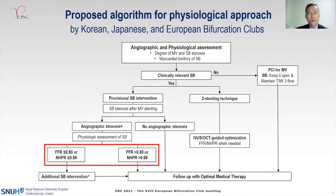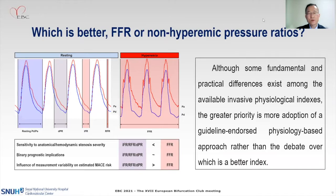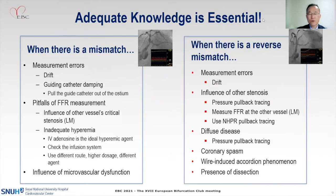We also describe the issues of FFR versus non-hyperemic pressure ratios. There can be several differences in backgrounds, practical application, and the amount of evidence for bifurcation lesions. But our stance is that the greater priority is for more adoption of a guideline-endorsed physiological-based approach, rather than the debate over which index is better. The same applies to cases with reverse mismatch — angiographically insignificant but physiologically significant — where you must check all possibilities and limitations of physiological indices before making a clinical decision.